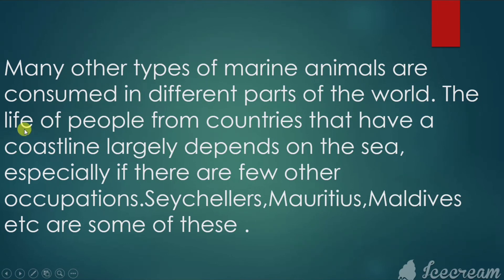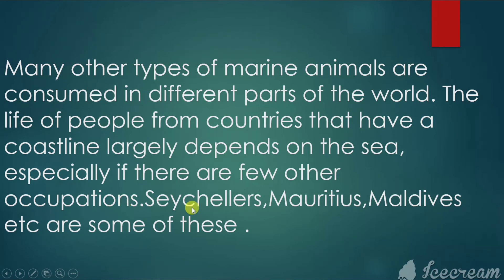The life of people from countries that have a coastline largely depends on the sea, especially if there are few other occupations. Islands like Seychelles, Mauritius, and Maldives are some examples of this.